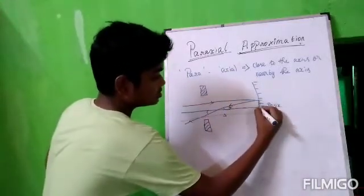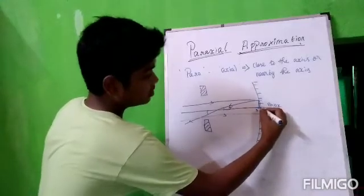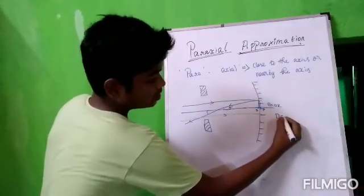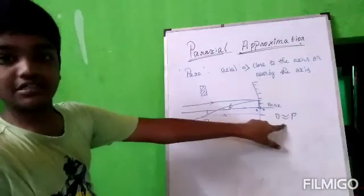Here, this distance D is nearly equal to P. This is called paraxial approximation.